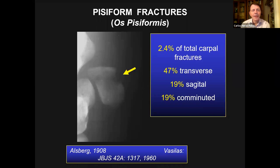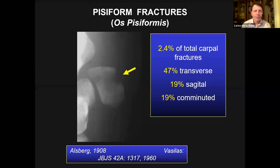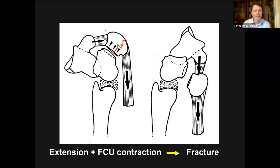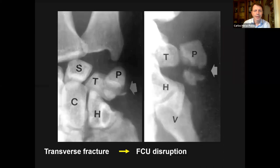Fractures of the pisiform are more common than we think and are caused by a fall on a stretched hand. They are 2.4% of total carpal fractures. Clinically easy to find because the pisiform is quite tender — you can grab it and move it side to side and the patient will find that quite painful. Remember there are lots of insertions on the pisiform, including the flexor carpi ulnaris, the flexor retinaculum, the pisohamate ligament, the pisometacarpal ligament, and the muscles of the hypothenar eminence, as well as the extensor retinaculum — so it's under a lot of tension and movement will cause pain. There's also a type where it breaks transversely when the flexor carpi ulnaris is pulling, and a transverse fracture may represent a flexor carpi ulnaris disruption, so you need to test the function of the flexor carpi ulnaris if you see this pattern.